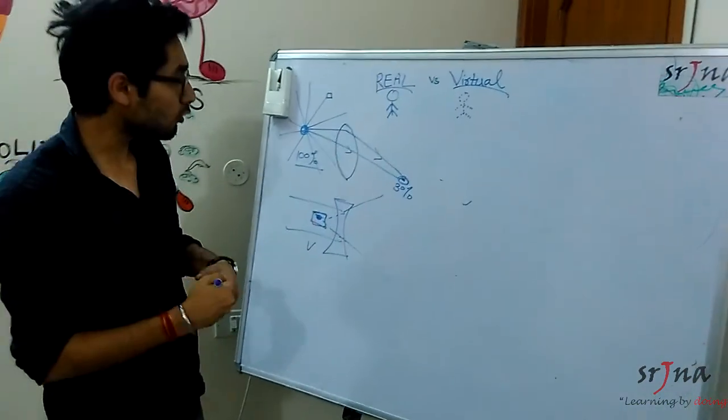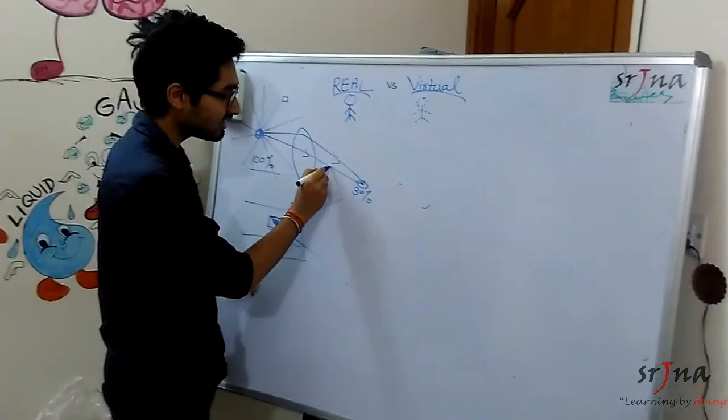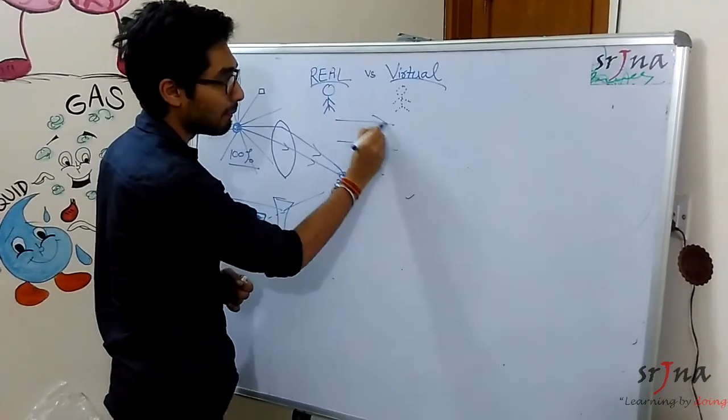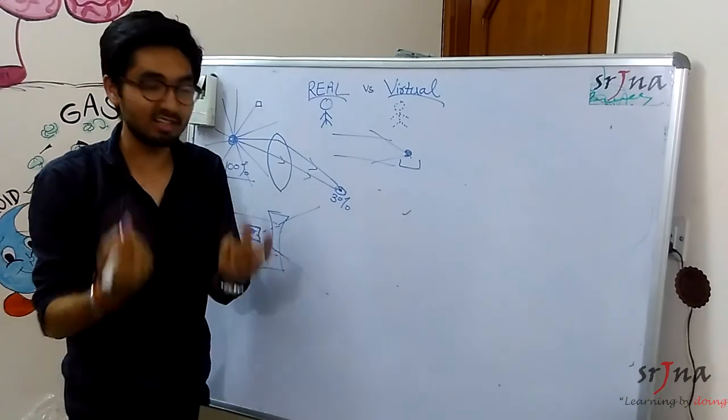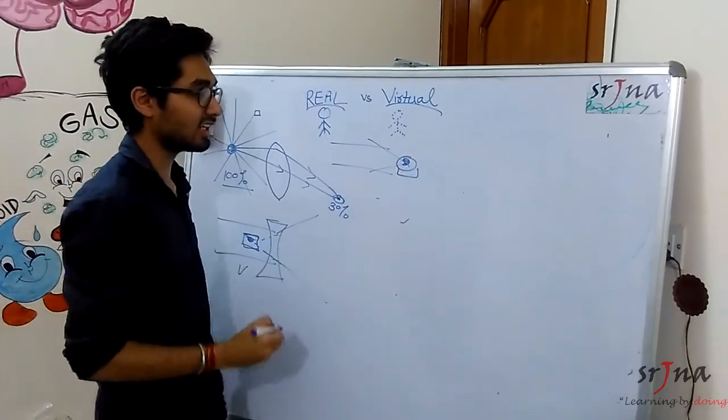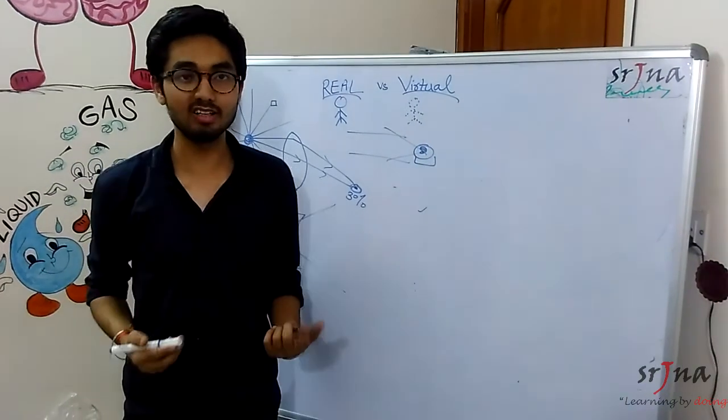So it is actually wrong to say whether it's a real image or a virtual image. Let's just say when the rays of light meet they'll make something where the intensity of light increases and hence we can see that image. So this was all about real and virtual image. Hope you got a real understanding.